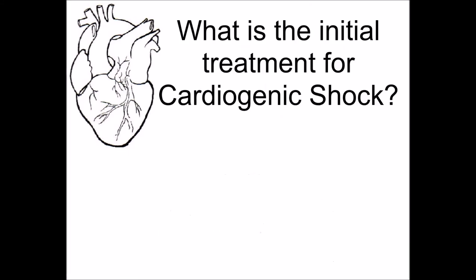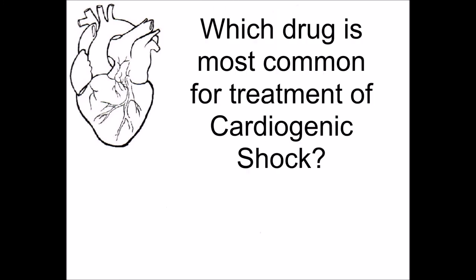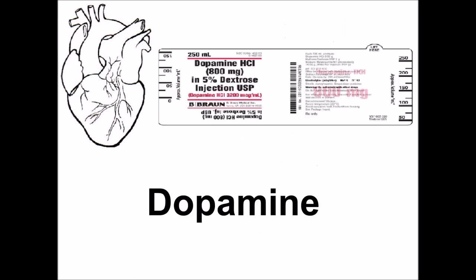What is the initial treatment for cardiogenic shock? Increased myocardial oxygen supply. Which drug is most common for treatment of cardiogenic shock? Dopamine.